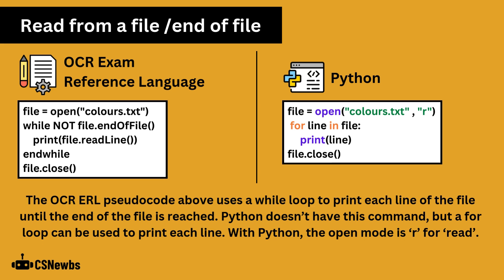The OCR pseudocode uses a while loop to print each line of the file until the end of the file is reached. Python doesn't have this command, but a for loop can be used to print each line. With Python, the open mode is R for reading.